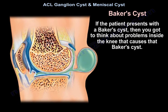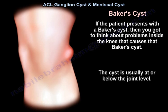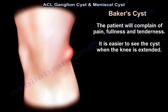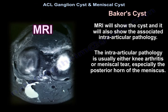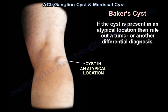If a patient presents with a Baker's cyst, you have to think about problems inside the knee that are causing it. The cyst is usually at or below the joint level. The patient complains of pain, fullness, and tenderness, and it is easier to see the cyst when the knee is extended. MRI will show the cyst and also the associated intra-articular pathology, which is usually either knee arthritis or a meniscal tear, especially the posterior horn of the medial meniscus. If the cyst is in an atypical location, rule out a tumor.